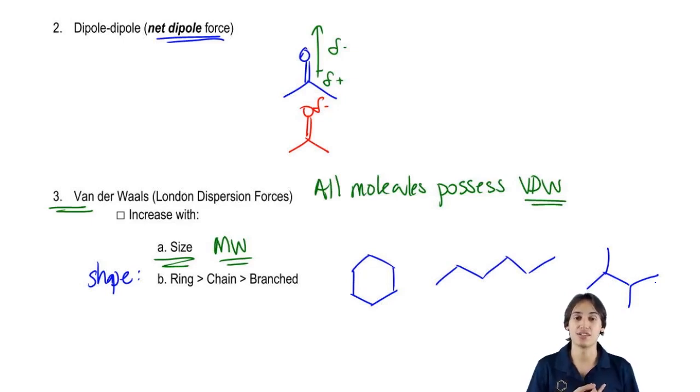First of all, what we would look at is the size. Are all the sizes the same? Yes, they all have six carbons. So actually in terms of size, they're fine. Then I would look at the shape. Which one has the shape that can arrange the neatest and can stack the best?